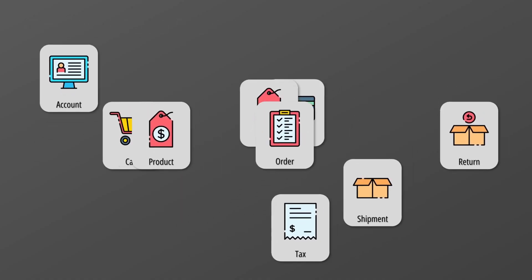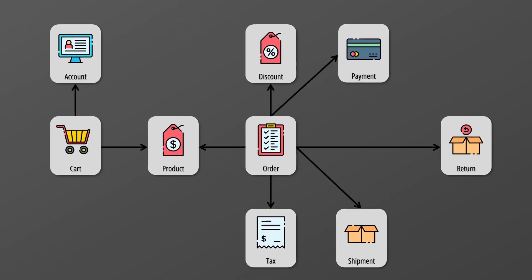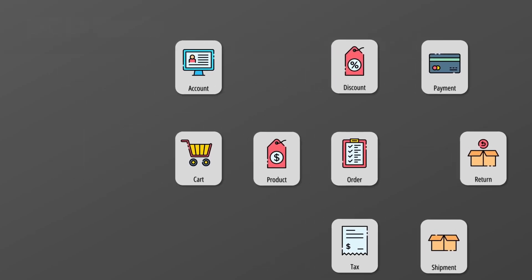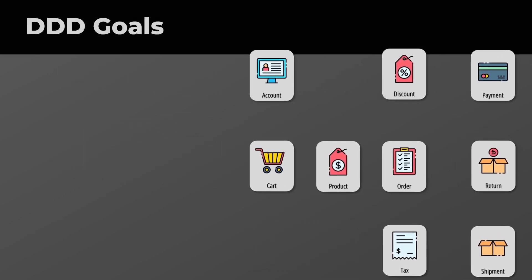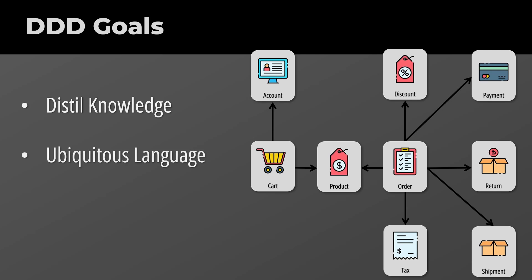The answer is we create a domain model. A model is a simplified and structured abstraction that maps and documents everything of interest in the domain. Its main goals are to distill knowledge, create a ubiquitous language, and a shared understanding among all stakeholders — from software developers to executives.